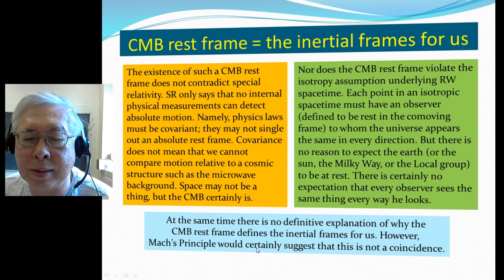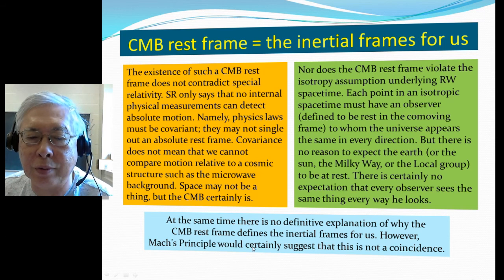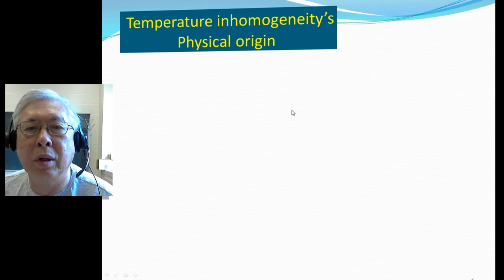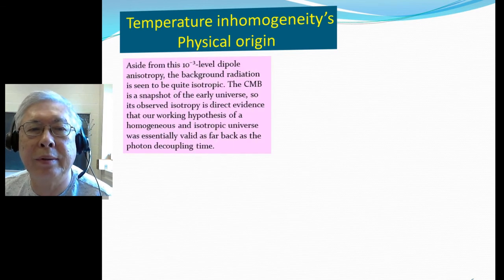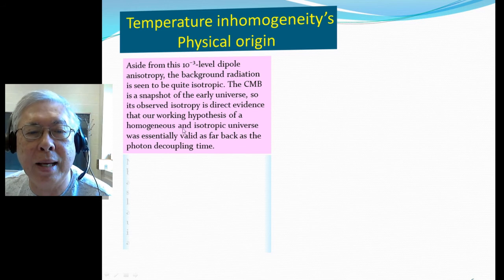Of course, Mach's principle would suggest this is not a coincidence — there is a reason. For example, one expects that the average mass distribution determines inertia. As for the physical origin of this inhomogeneity: aside from the 1/1,000-level dipole anisotropy, the background radiation is seen to be quite isotropic. The CMB is a snapshot of the early universe, so its observed isotropy is direct evidence for our working hypothesis — the cosmological principle of a homogeneous and isotropic universe — and this goes back to the photon decoupling time.